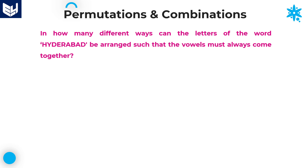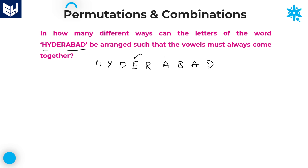In how many different ways can the letters of the word 'Hyderabad' be arranged such that vowels must always come together? The word is 'Hyderabad'. Now, how many vowels are there in this word? There are 3 vowels, and those three vowels always come together according to the condition.